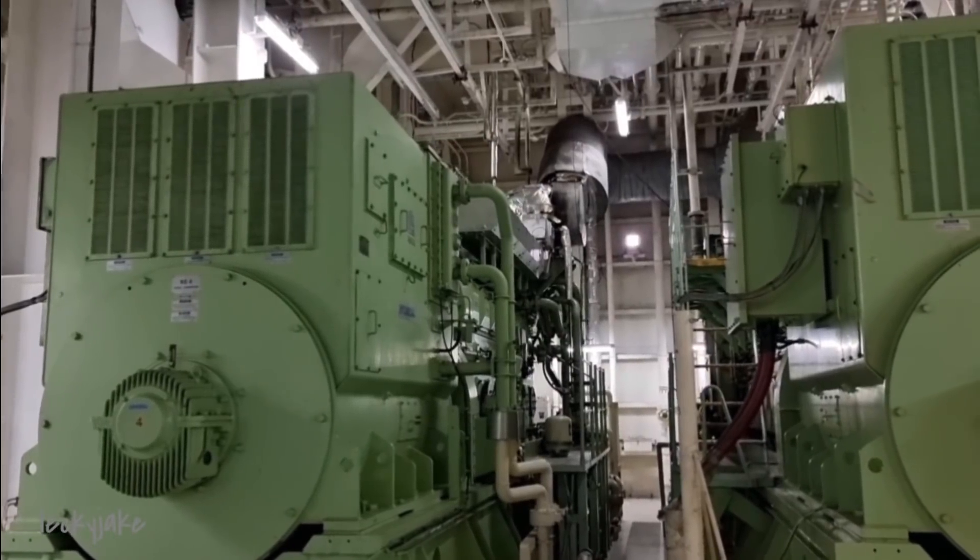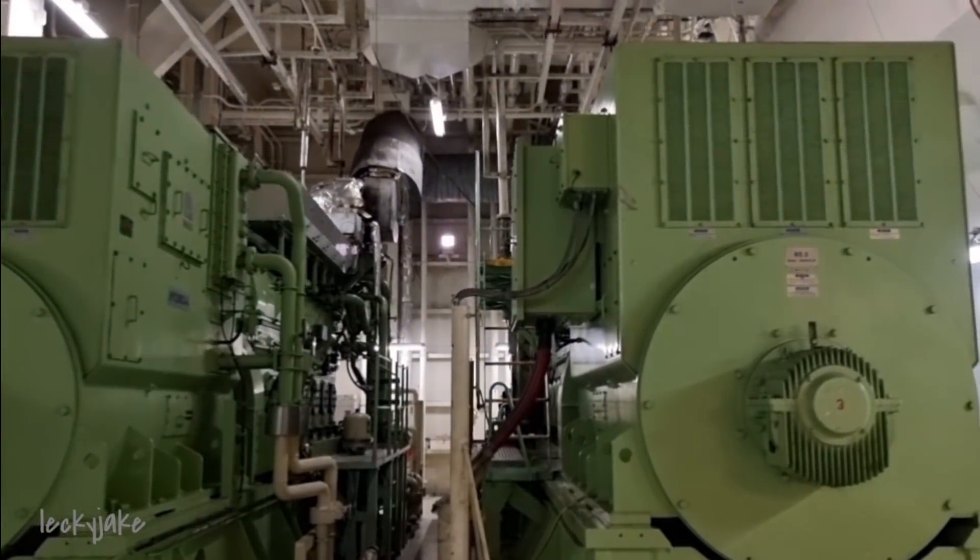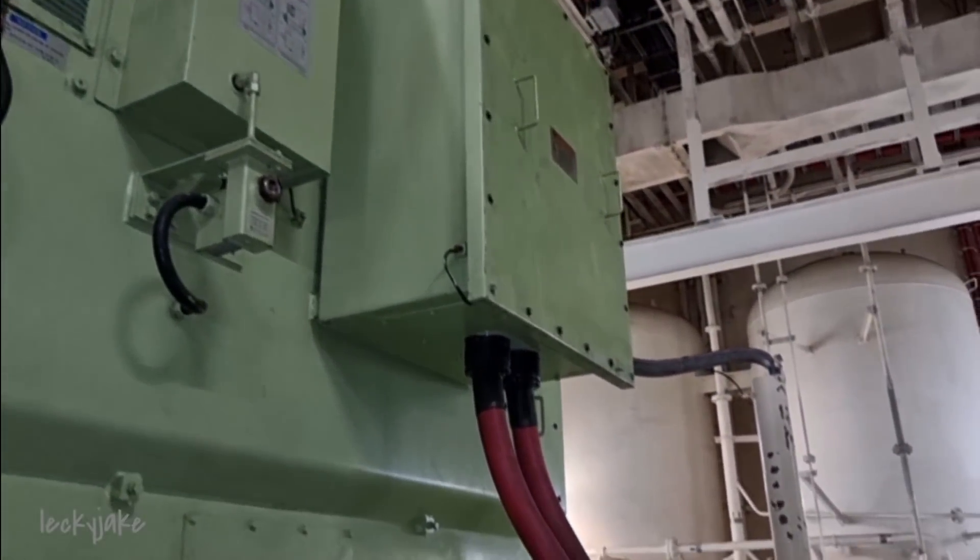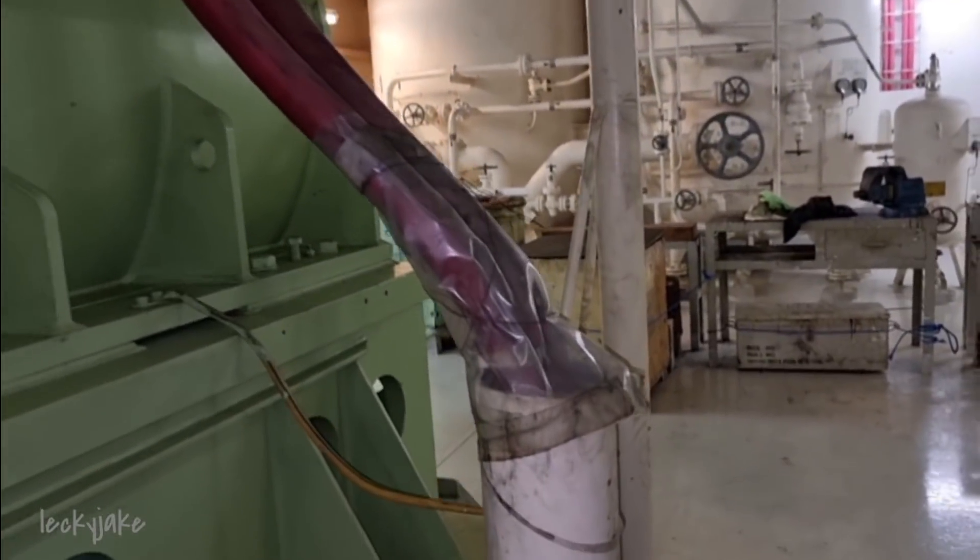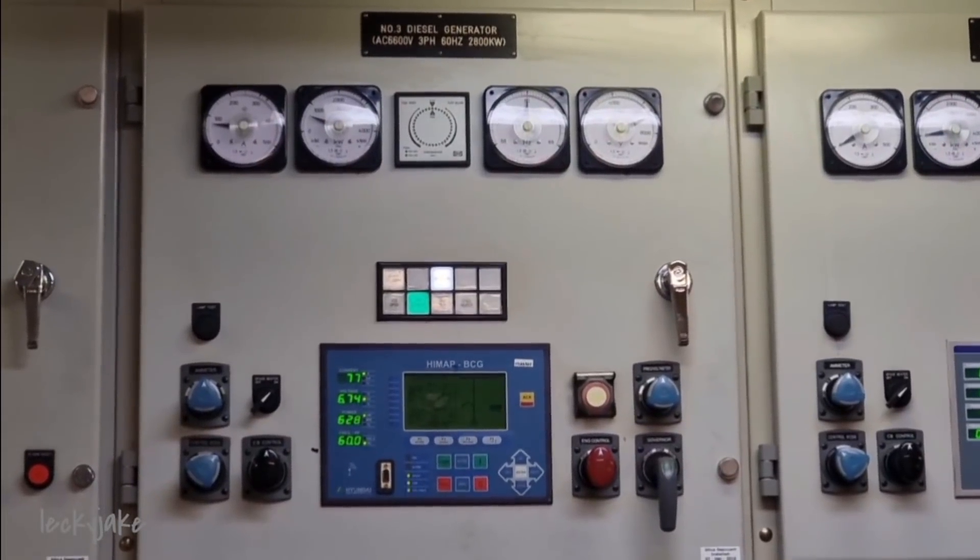The main switchboard and generators can be controlled in one of three ways: manually from the main switchboard, semi-automatically from the operator control stations, or automatically via the PMS or the power management system.